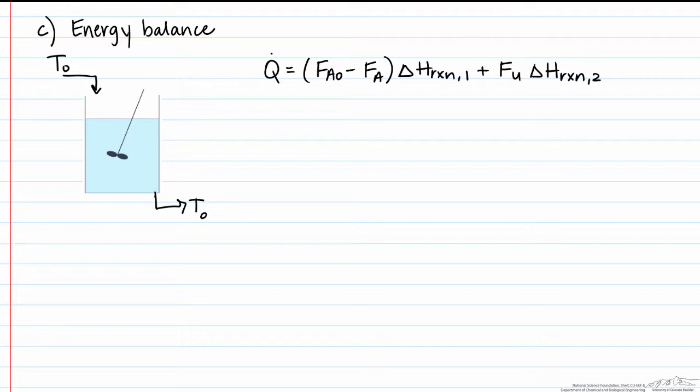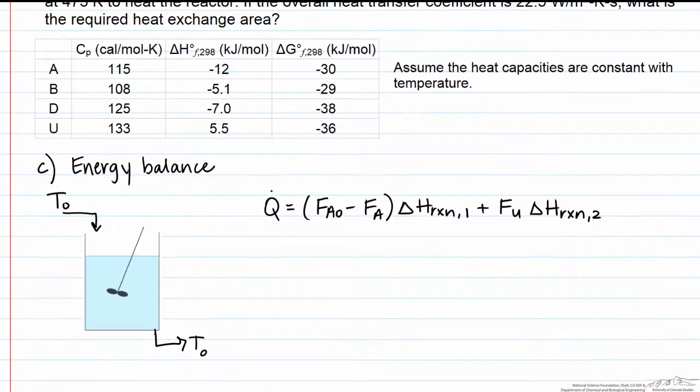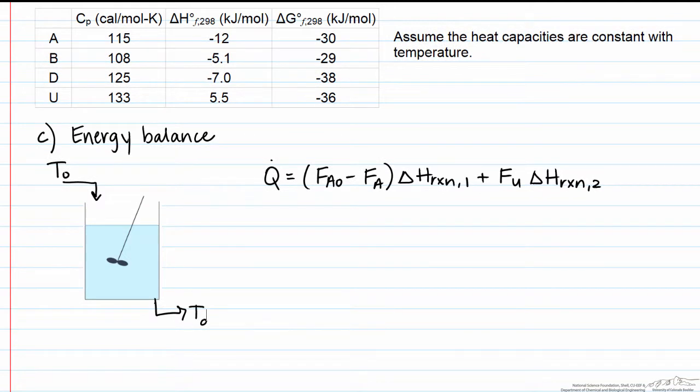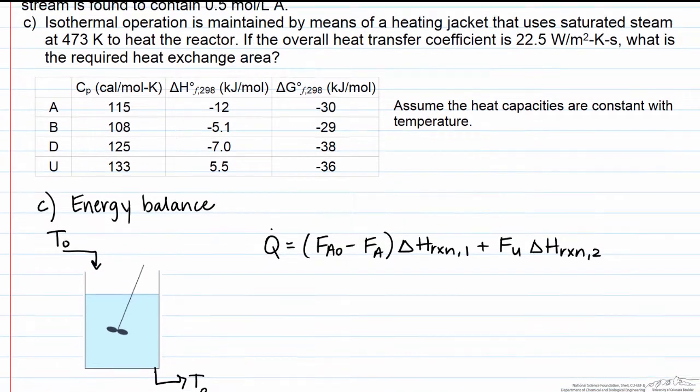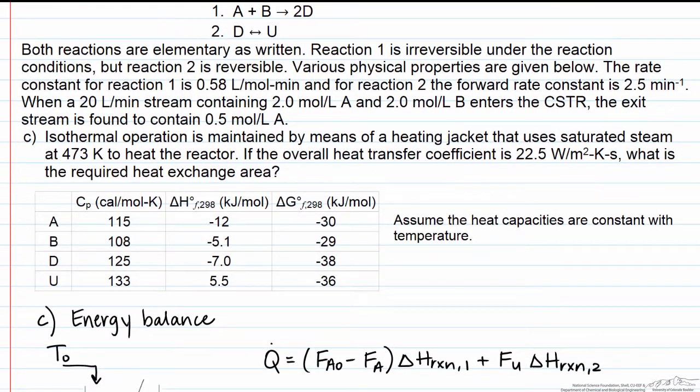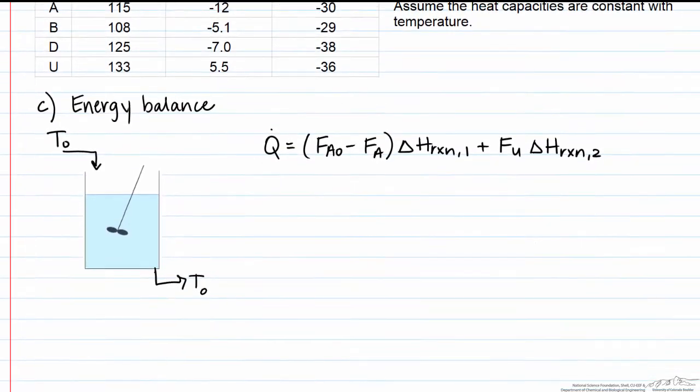Right now, we need information about the heats of reaction in this system, and those are given above. If we look at this data table, we see that we're given enthalpies of formation for all the different reactants and products. We can use the stoichiometry in order to compute the heat of reaction.